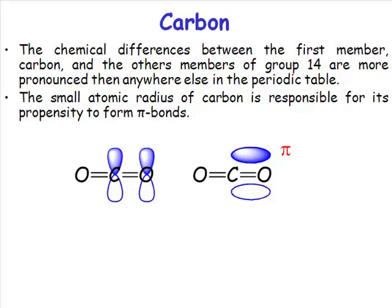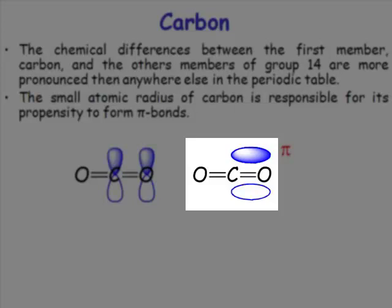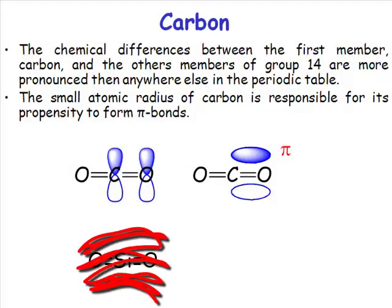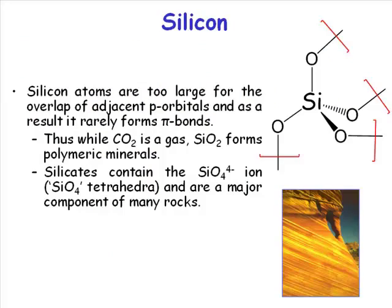The earlier elements in a group are much more likely to form multiple bonds than the later elements. So the structure of carbon dioxide is a multiply bonded structure, where the structure of silicon dioxide is not a multiply bonded structure. Silicon atoms are too large for the overlap of p orbitals.